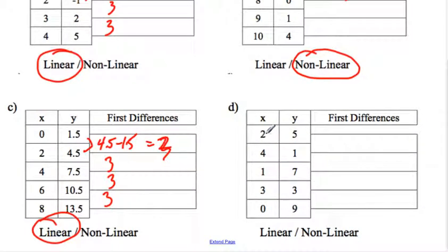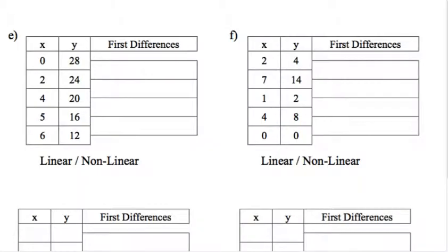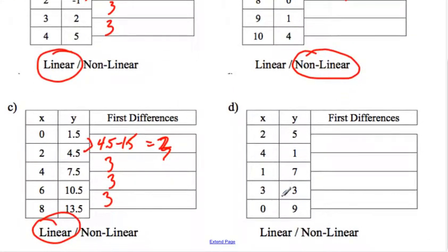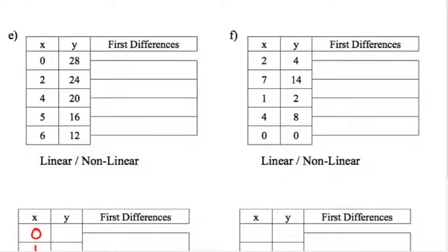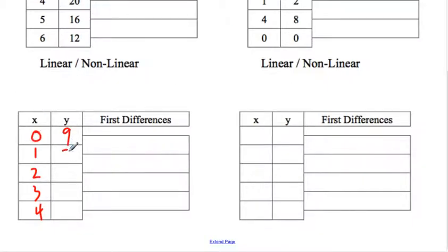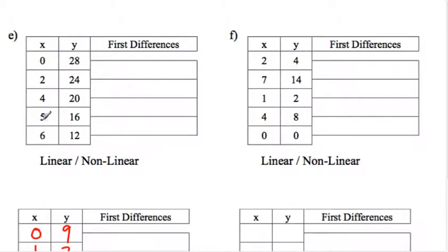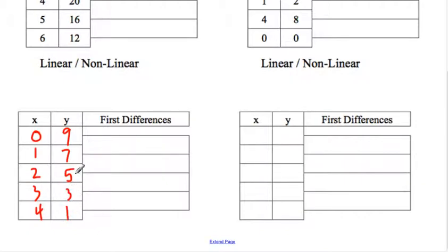Let's check D. The X column goes up 2, then down 3 — so it's not in the right order. Let's check if we can reorder it: 0, 1, 2, 3, 4 — they're all there, so we're going to reorder. Going to the blank table at the bottom of the sheet. The reordered table is: X = 0, Y = 9; X = 1, Y = 7; X = 2, Y = 5; X = 3, Y = 3; X = 4, Y = 1. Now they're going up by the same number and we didn't skip any, so now we can do the first differences and get an accurate result.